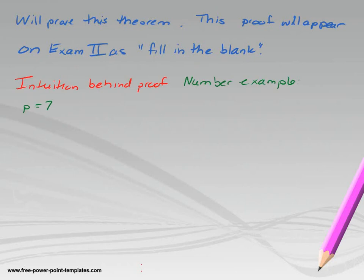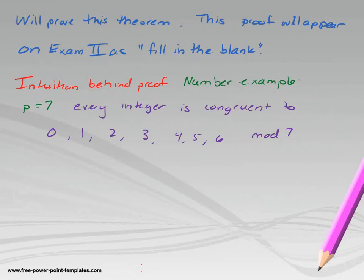Let me start with the intuition behind the proof with a number example. I took p equals 7. If you've had abstract algebra and understood it, this will make sense. Every integer is congruent to either 0, 1, 2, 3, 4, 5, or 6, because these are the remainders when you divide by 7. These are the equivalence classes — when you divide any integer by 7, you can pack it into one of these boxes, and 0 through 6 are the labels on the outside. So every integer is congruent to one of these 7 numbers.